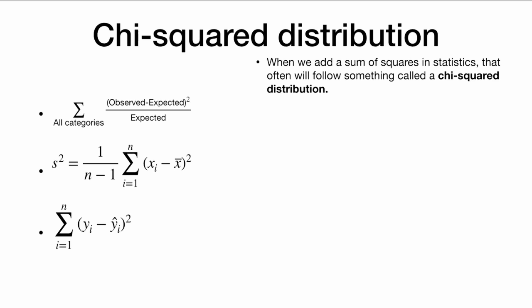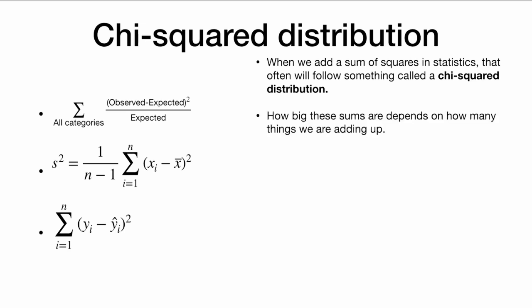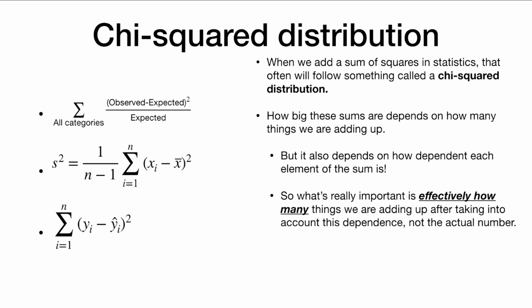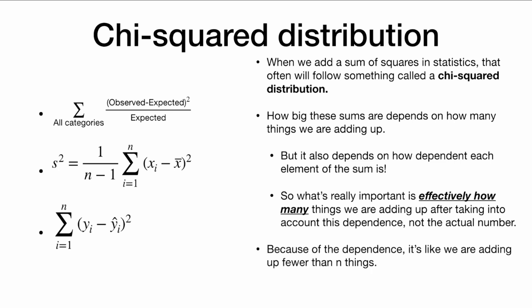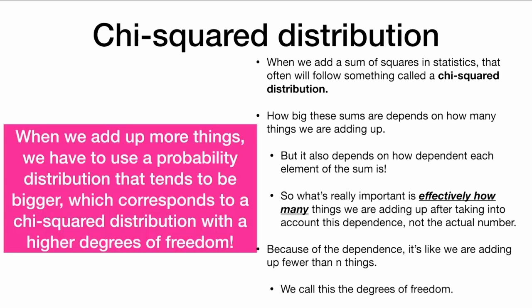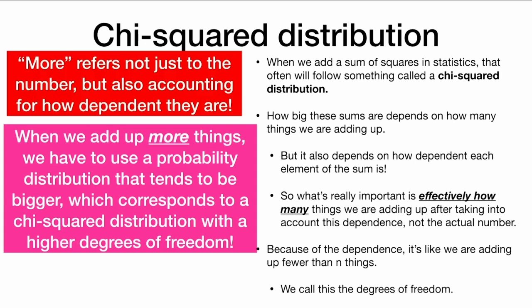We've seen examples of adding up sums of squares. When we add up a sum of squares in statistics, that often follows something called a chi-squared distribution. How big these sums are depends on how many things we are adding up, but also on how dependent each element of the sum is. What's really important is effectively how many things we are adding up after taking into account this dependence — not the actual number. Because of this dependence, it's like we are adding up fewer than n things, and we call this the degrees of freedom. More degrees of freedom corresponds to a chi-square distribution that tends to be bigger, accounting not just for the number but also for how dependent they are.